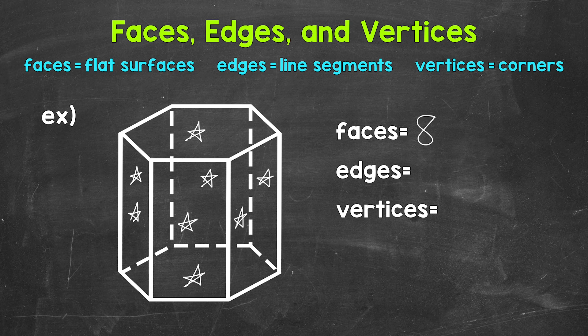Next, let's identify and count all of the edges. Now edges are the line segments that are formed by two faces meeting. For example, this is an edge right here. So let's start here and work our way around the top. So one edge, two edges, three edges, four edges, five edges, six edges.